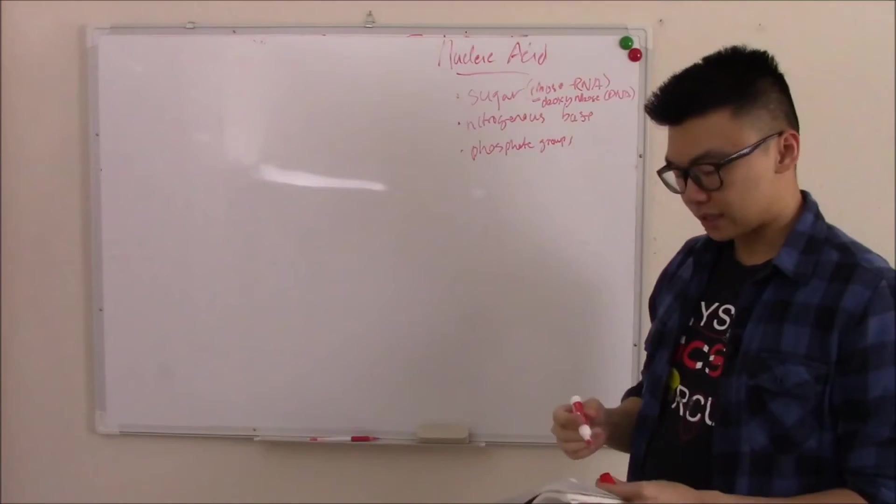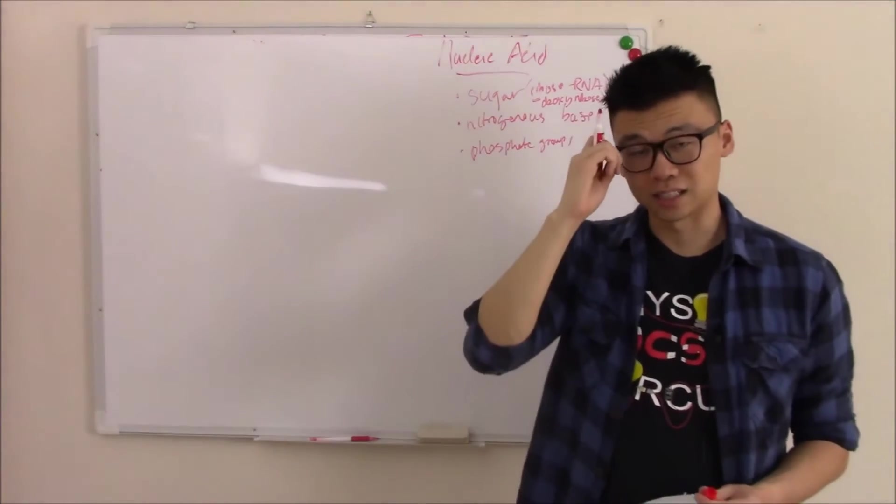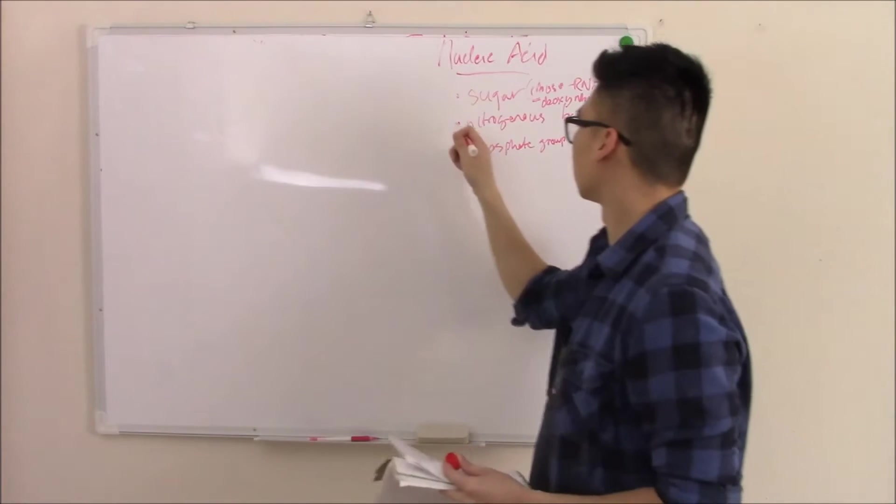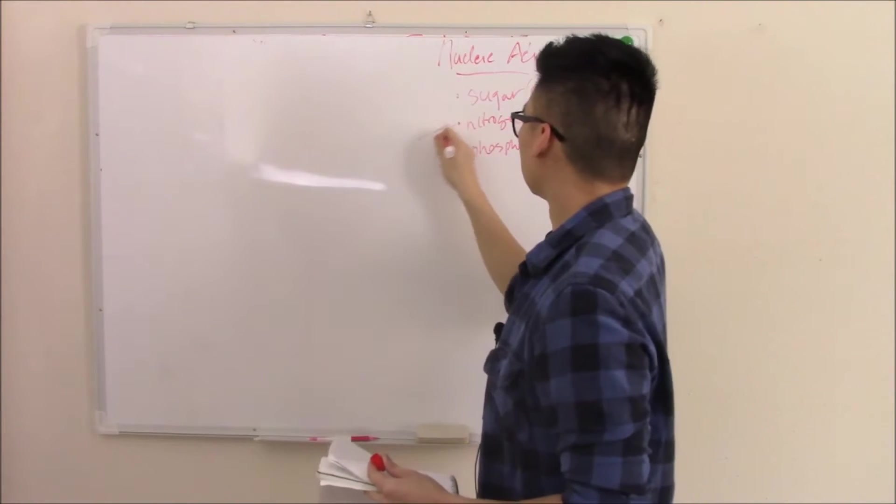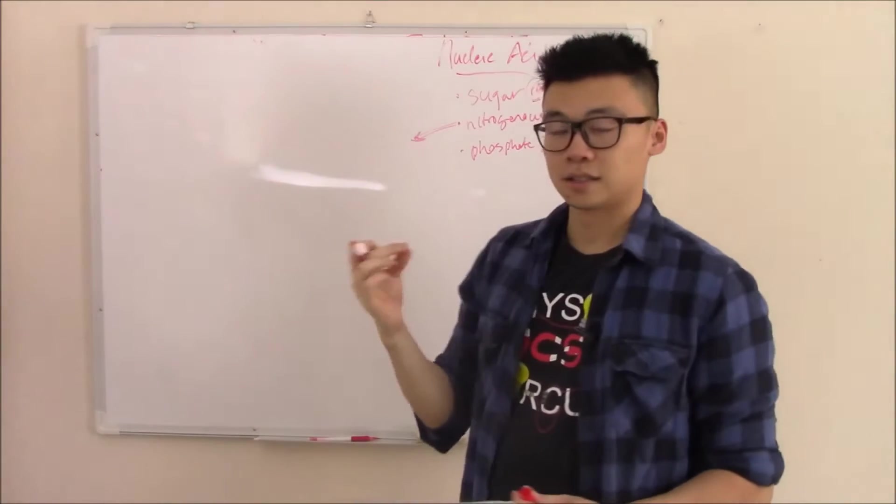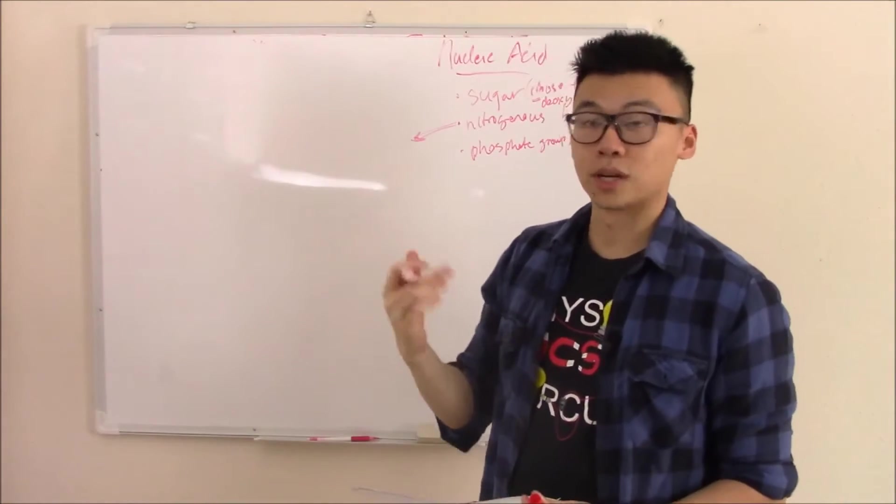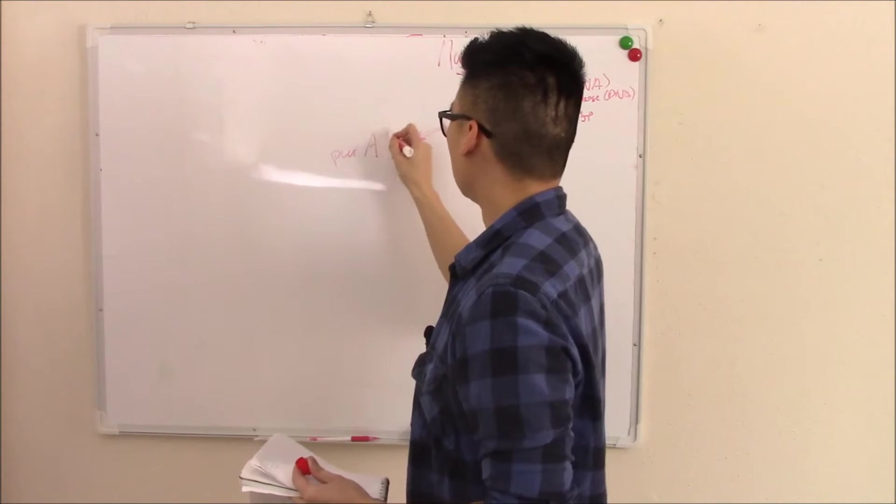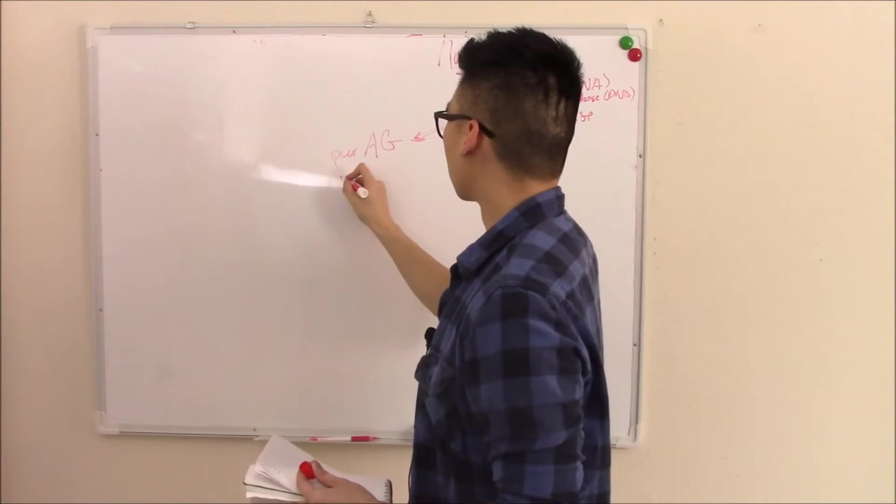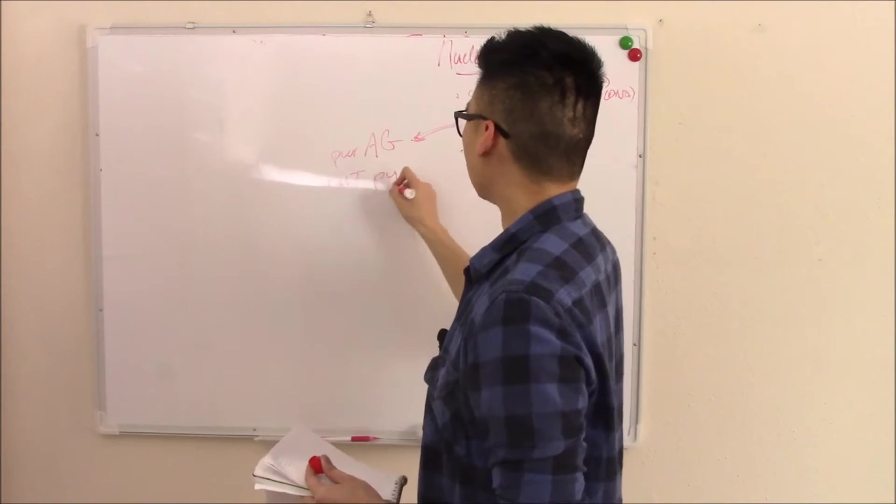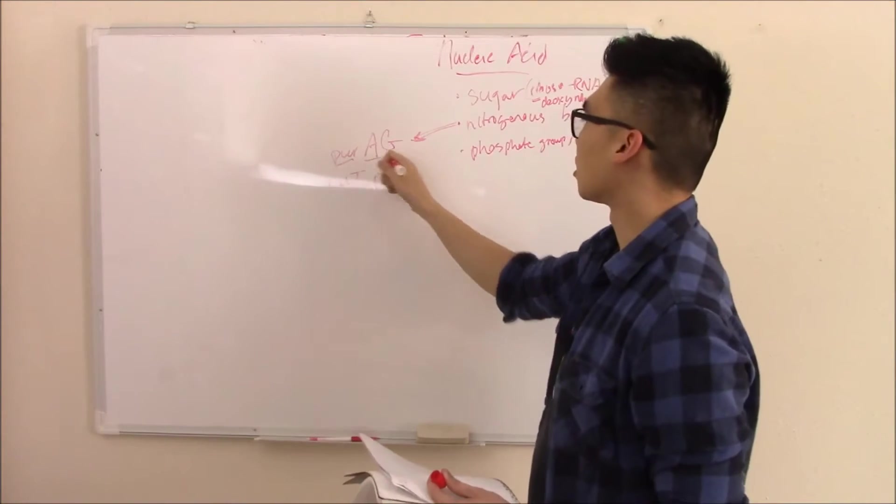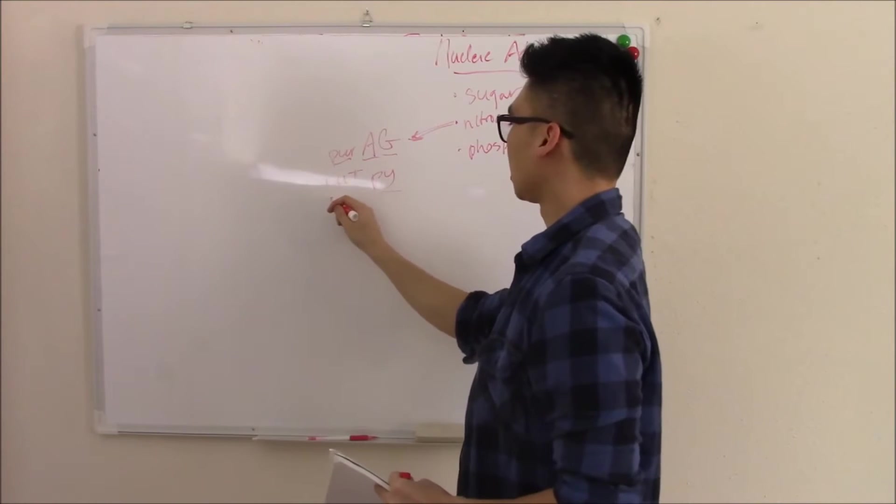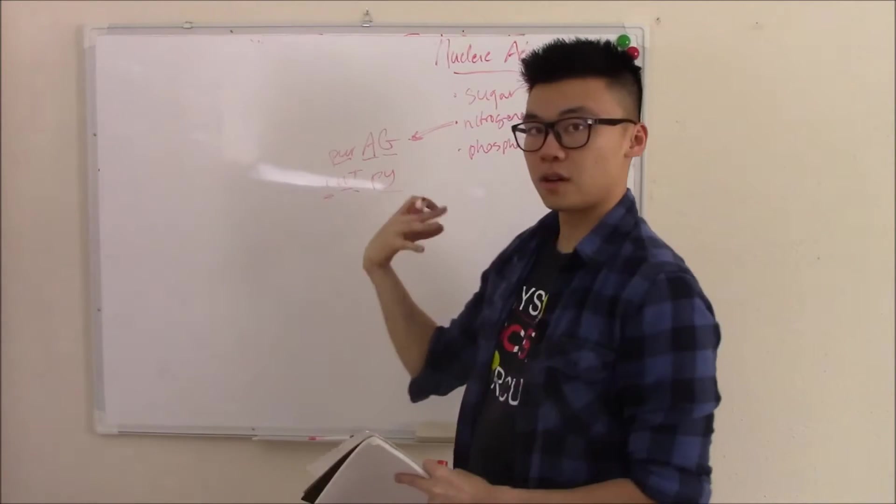Nitrogenous bases - the different bases make up the different kinds of nucleic acids. So you can have your purines and your pyrimidines. Since seventh grade biology, they've taught the same old mnemonic: purines as gold or cut the pie. So your purines are adenine, guanine, your pyrimidines are cytosine, uracil, and thymine.